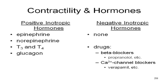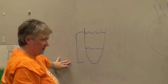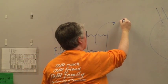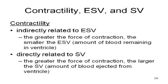Your body doesn't really produce negative inotropes — it doesn't make things to weaken the heart. But for someone in congestive heart failure, doctors try to extend the life of the heart, and they can give things like beta blockers and calcium channel blockers. Contractility is indirectly related to ESV — the harder the ventricle contracts, the less blood is left in it, and the more blood that leaves.